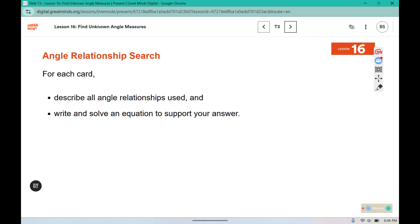So in class we are going to do a game where the cards have a question on one side and an answer on the other. And you have to create like a chain to get from the starting card to the finished card. It says for each card describe all angle relationships used and write and solve an equation to support your answer. So you'll have to solve it but you want to write the equation and the relationship that you used to solve it.